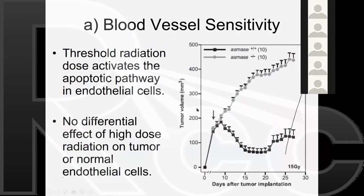Groups of animals with and without the sphingomyelinase protein (plus/plus and minus/minus) were studied, measuring tumor volume as a function of days after tumor implantation. When 15 gray was given and sphingomyelinase was present, tumors decreased in size. Without the protein, tumors were not sensitive to radiation—very convincing results. Unfortunately, nobody has been able to repeat this, and there remains skepticism in the field. It's a compelling argument, but so far elusive.